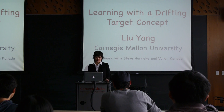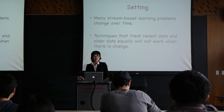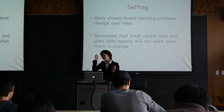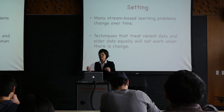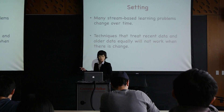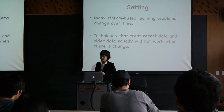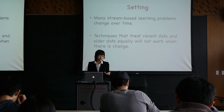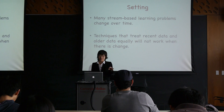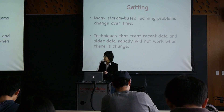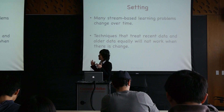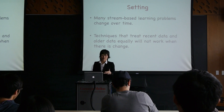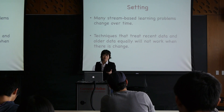Good afternoon everyone. The topic I'm talking about today is machine learning over time. In the typical machine learning problem we have a target concept to be learned, but here it changes over time. The key technical challenge is that we need to treat older data as less relevant than the more recent one — that is, recent data is more relevant than older data.